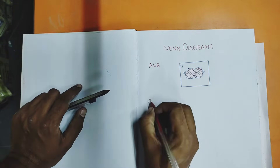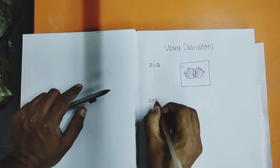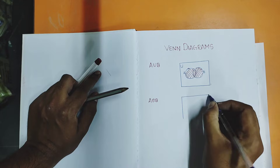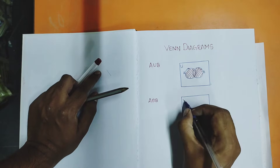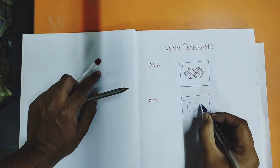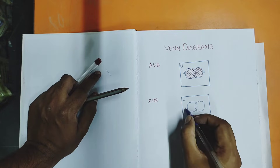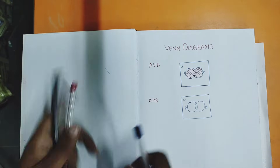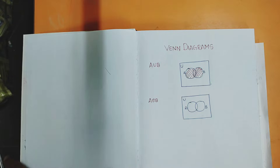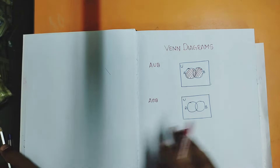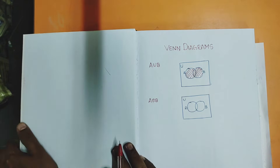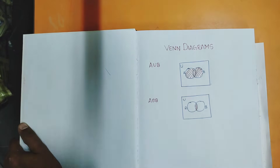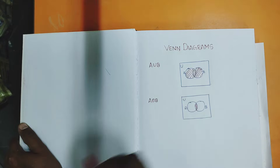Now let us see the Venn diagram for A intersection B. How to draw A intersection B? Same thing — first we draw the box of the universal set. We have set A and set B. Intersection means what? The common terms which are common to both A and B. Where will those elements be? In the overlapping portion. So this is A intersection B.